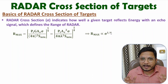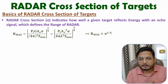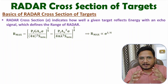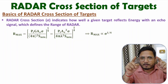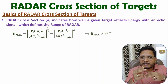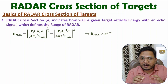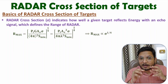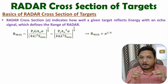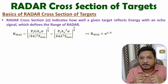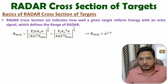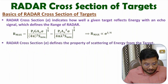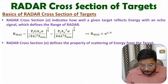Now, here the question is how to identify cross section of the target. Usually, you may say you are having one object — let us say a square object — and area is length into width. But here cross section of the target is not calculated in that way. Here cross section of the target is calculated based on how much energy is getting reflected by the target, defined based on the property of scattering of energy from the target.